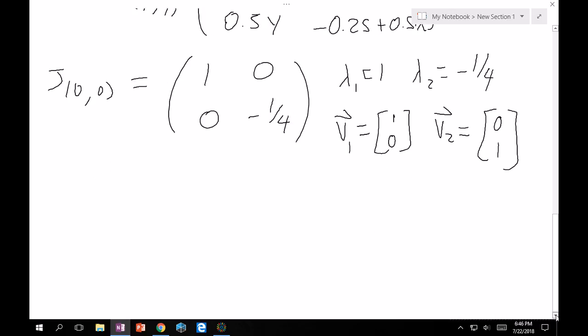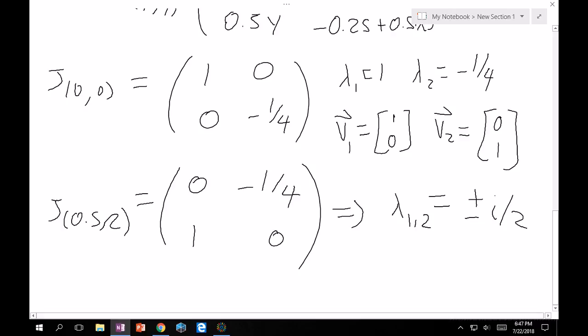Okay. And then let's do that other critical point. J of 0.5, 2 is going to give me 0, 1, minus one-fourth, 0. Again, yeah, that still looks like a 9. Cool. And then you'll see that this will give me lambda 1, 2 is equal to plus or minus i over 2. Oh, I forgot to calculate the stability.